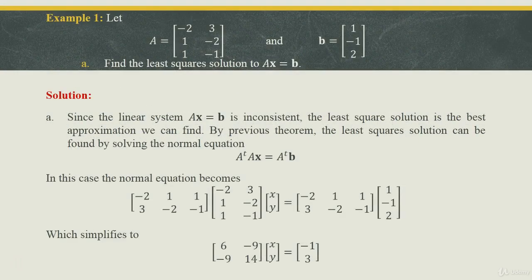Now let's take an example. Let A be the matrix [−2, 3; 1, −2; 1, −1] and b = [1; −1; 2]. Find the least square solution to Ax = b. Since the linear system Ax = b is inconsistent, the least square solution is the best approximation we can find. By the previous theorem, the least square solution is found by solving the normal equation A^T A x̂ = A^T b.